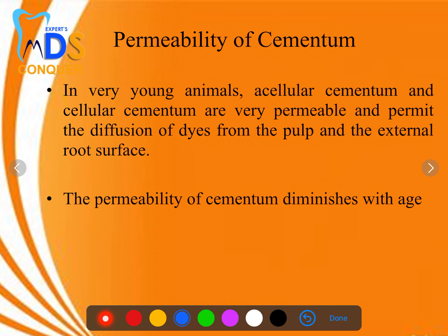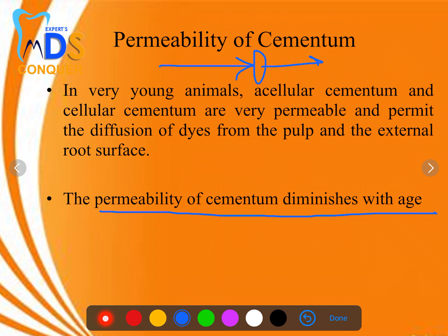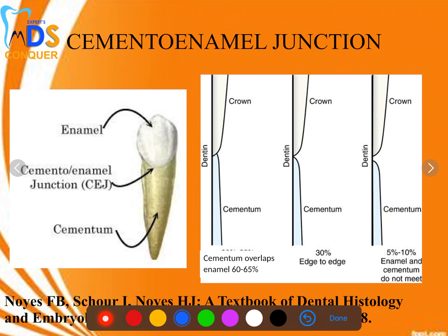Permeability means allowing a substance to pass through. The permeability of cementum diminishes with age, meaning in a young animal the permeability is good. This helps in diffusion of dyes from the pulp and external root surface.